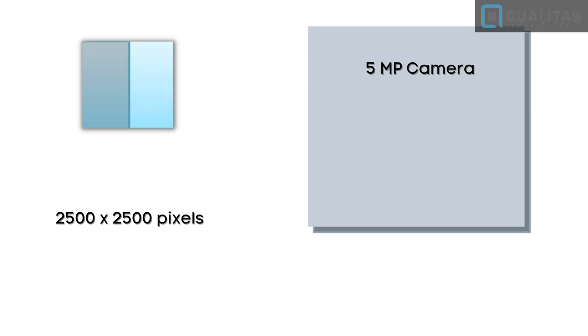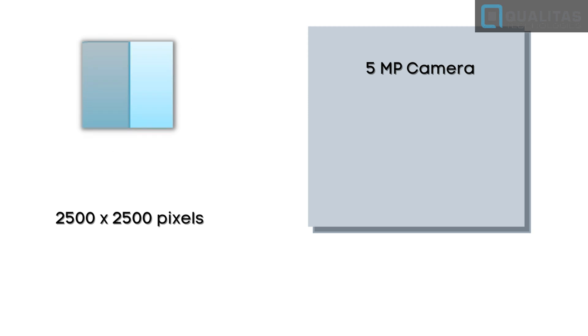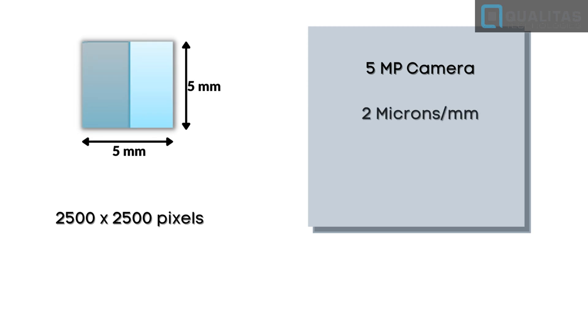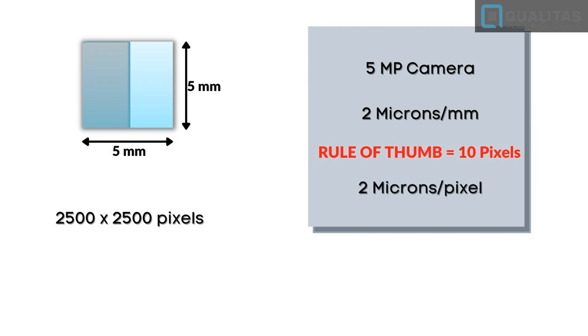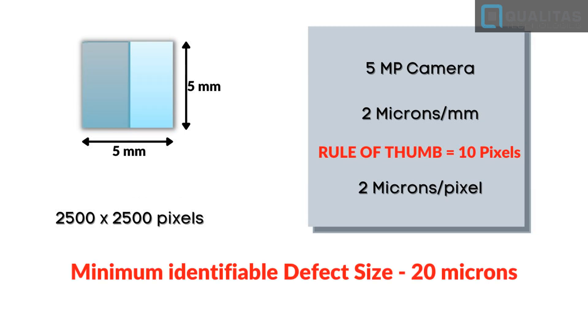Let's do the math. You have 2,500 pixels in one direction representing roughly five millimeters — that's about two microns per pixel. If you use ten pixels as the rule of thumb at two microns per pixel, you get about 20 microns as the defect size. So for a tablet, the smallest detectable defect is around 20 microns.